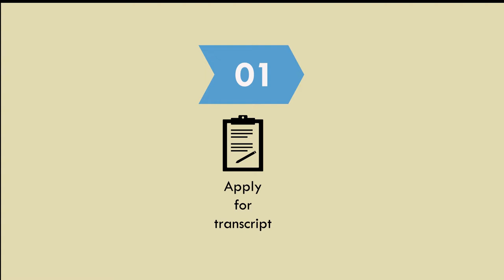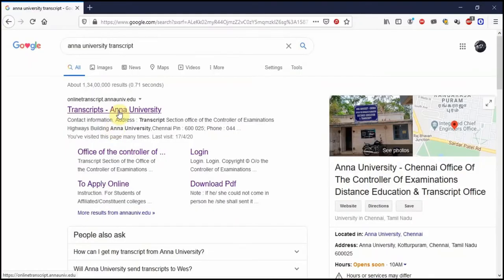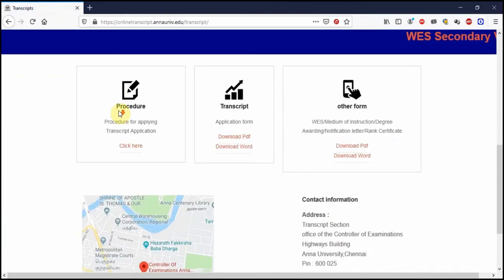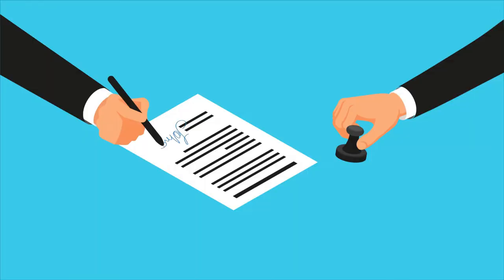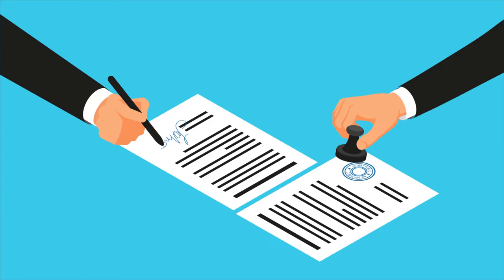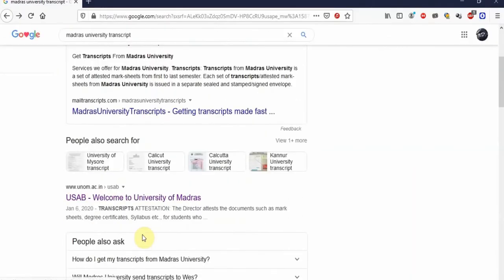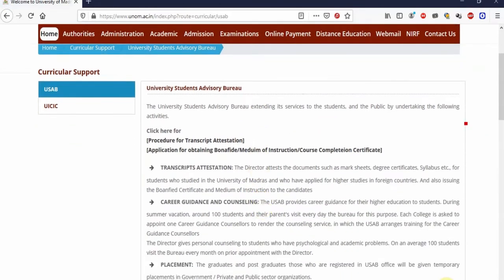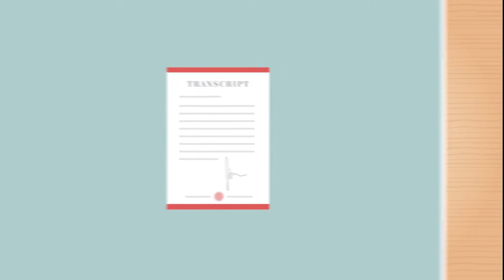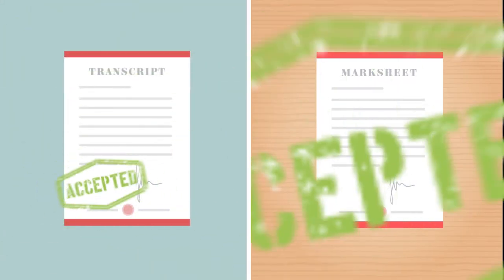Step one of the process involves applying for a transcript from your university. The procedure for applying will vary with each university, so visit your university website to find the procedure. Transcripts are essentially your mark sheets attested by your university — your university might describe this as attestation of documents rather than calling it transcripts, but be assured they are the same and are accepted by WES. Some universities will print a new transcript while others will simply sign the mark sheet copies you take with you. WES accepts both.